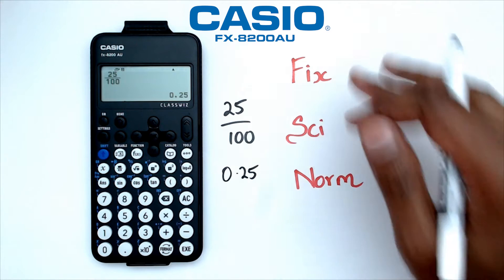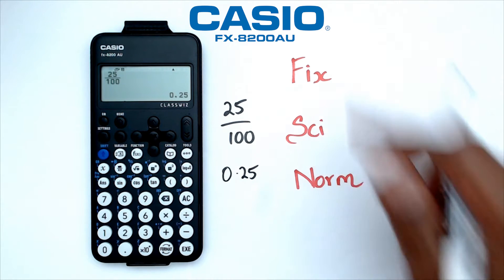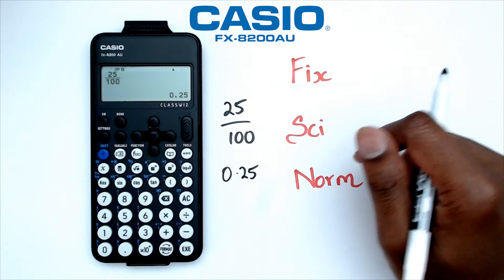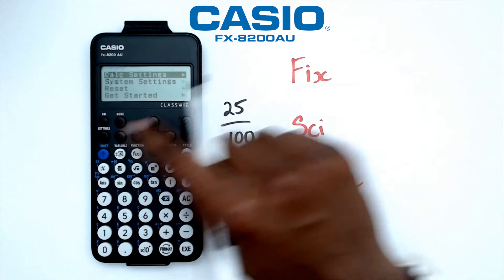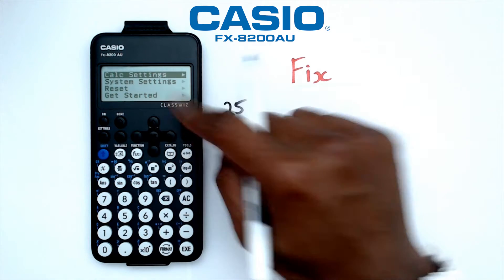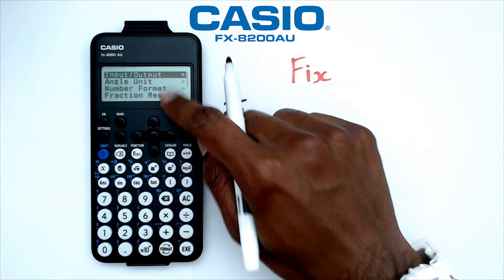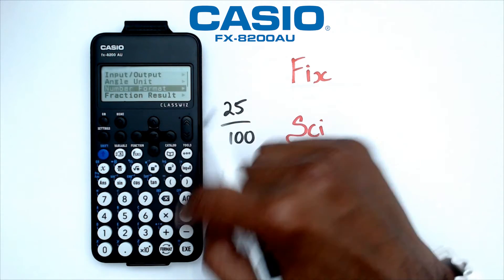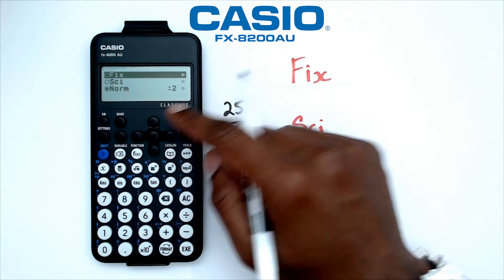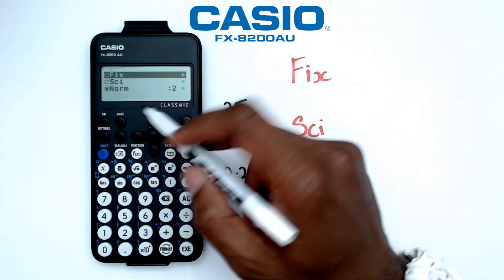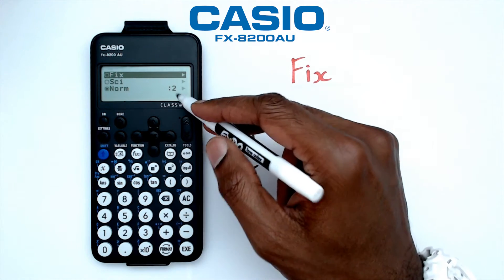Now here's where things are going to get a little bit interesting with these three different modes. So we're going to go into settings, go into calc settings, and go into number format. Once you're in number format, you can see that right now the calculator is set at norm and 2.